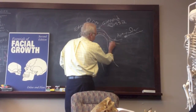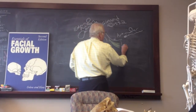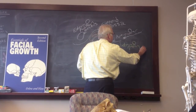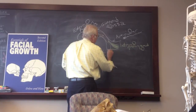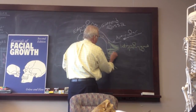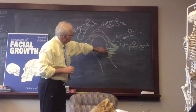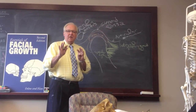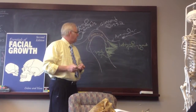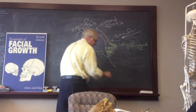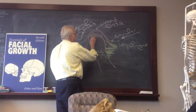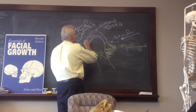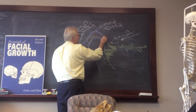The meniscus is attached here on the neck of the condyle by the capsular ligament, and it's attached here by the superior head of the lateral pterygoid muscle. The pterygoid muscle also attaches in a little depression underneath the condyle head.